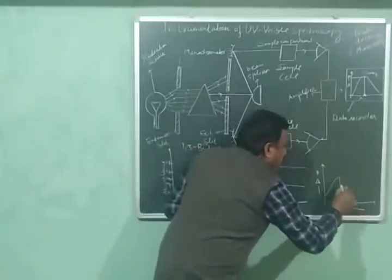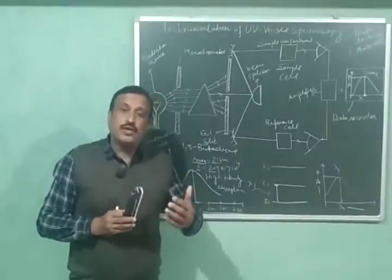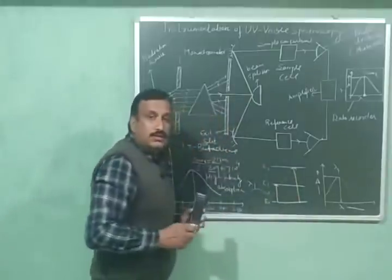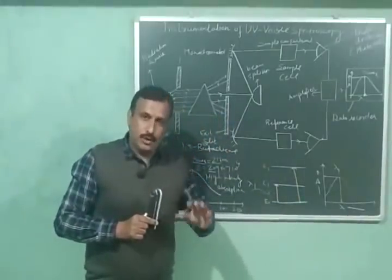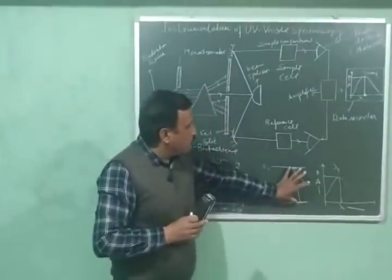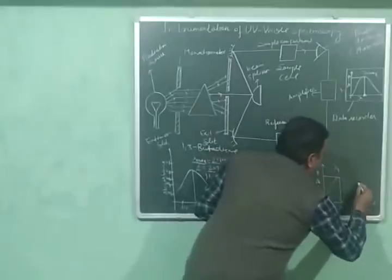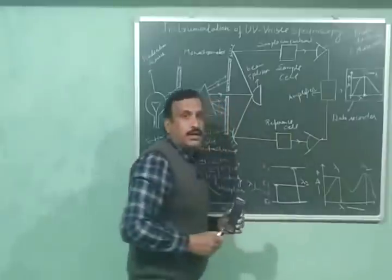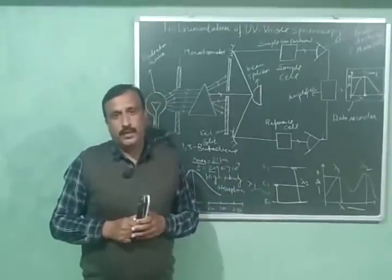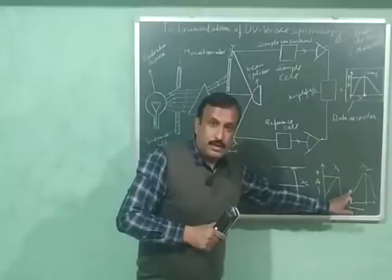If another electronic excitation is possible — for example, from E0 to E2 — then two transitions are taking place within the molecule, and there will be two peaks in the spectrum. Lambda 2 is the wavelength having energy corresponding to this second energy difference, so it will be the lambda maximum of the second peak. In this way, the number of peaks depends on the number of allowed electronic transitions.